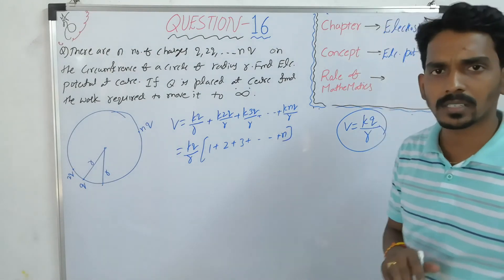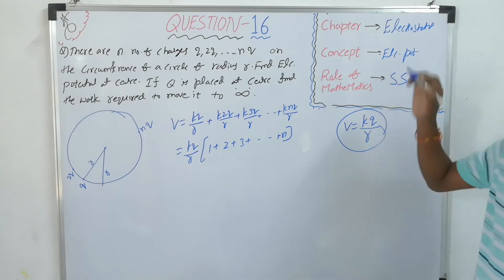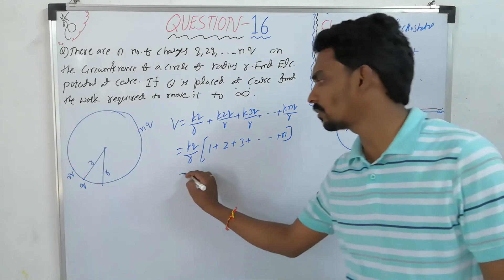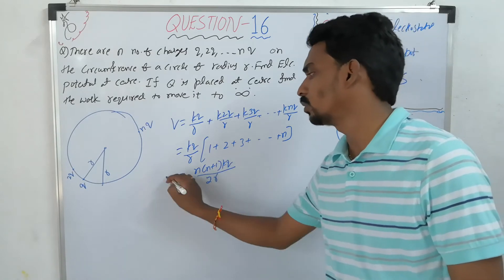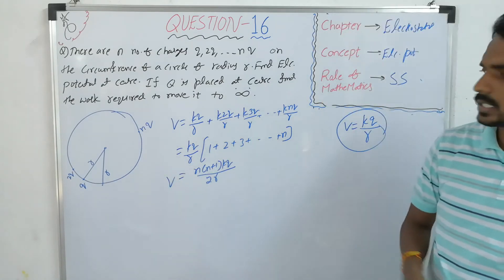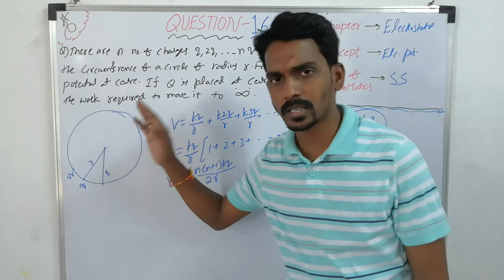So it is like sum of natural numbers. Sequence and series. If you take that one, then N times (N plus 1) by 2, so KQ by 2R.